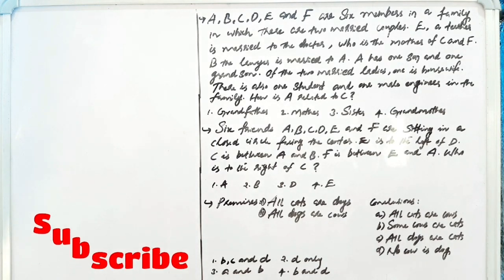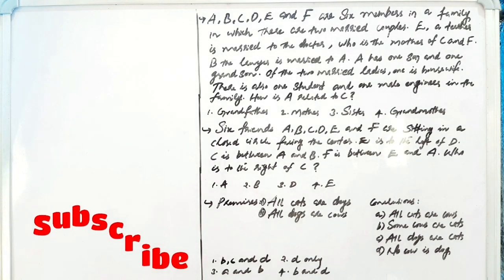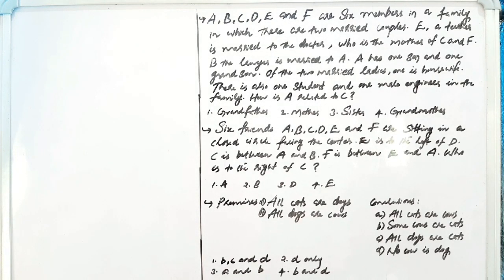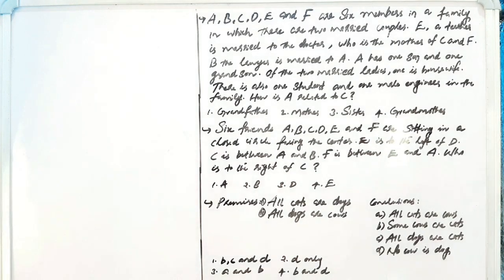A, B, C, D, E and F are six members in a family in which there are two married couples. E, a teacher, is married to the doctor who is the mother of C and F. B, the lawyer, is married to A. A has one son and one grandson. Of the two married ladies, one is a housewife. There is also one student and one male engineer in the family. How is A related to C?